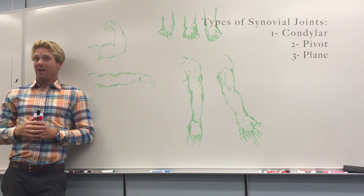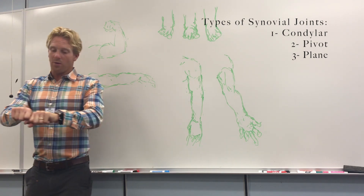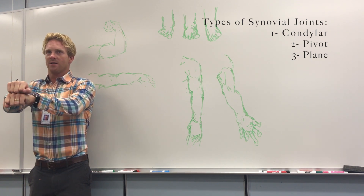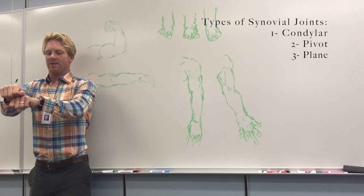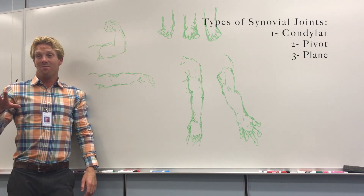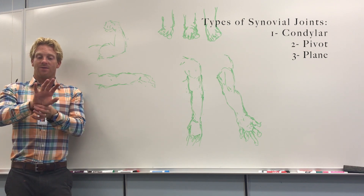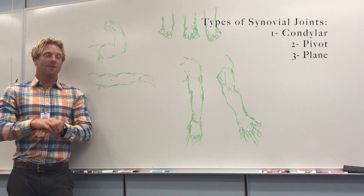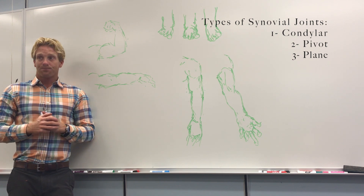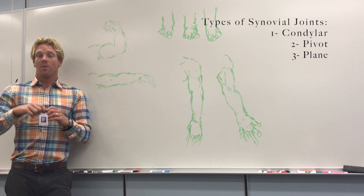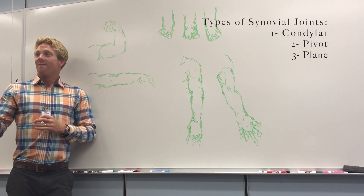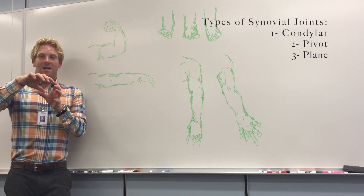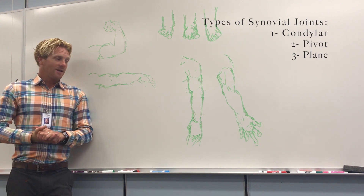Third, we have a plane joint. A plane joint is pretty simple — imagine you have two short bones, and in a plane joint, these bones just slide past each other. You'll find this within the carpal bones of your wrist, and also in your foot, where your tarsal bones slide past each other. You also find plane joints within the vertebrae, between the superior articular facet and the inferior articular process of the vertebra above it — those vertebrae slide past each other as you move your spine.